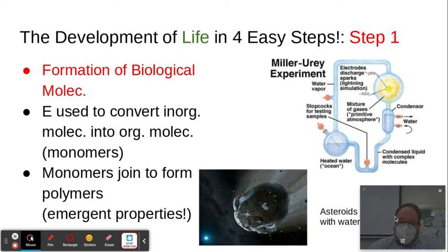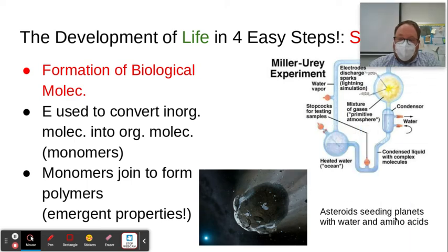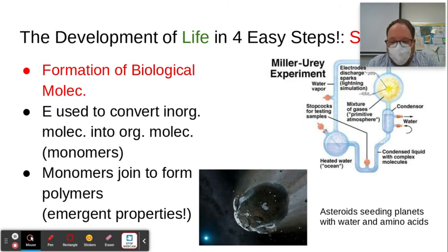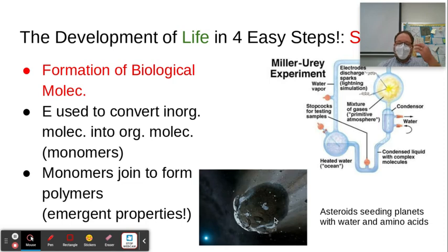Eventually, monomers can join together and form polymers — larger, more complex molecules. And remember one of the first ideas from this year: emergent properties. When you build more complex systems, they take on new properties and can do new things. Another idea for how we could have gotten molecules on Earth was seeding from meteorites — the idea that stuff that struck the Earth and helped form it contained some of the molecules that were able to get life going.